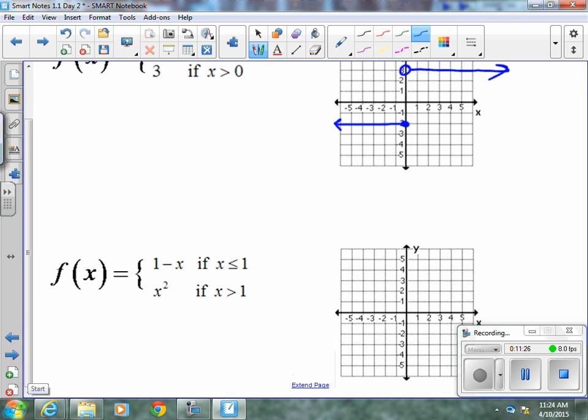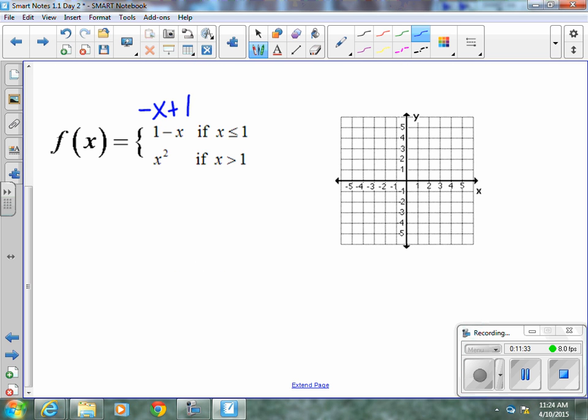Now, this is similar also. 1 minus x, if x is less than or equal to 1. Well, 1 minus x is the same as negative x plus 1. So, we know that it starts at 1, and it goes down 1, right 1, or up 1, left 1. And, this graph holds for all x's that are less than or equal to 1. So, that's going to be this portion of your graph. And, then, x squared, if x is greater than 1, well, we know what x squared looks like. At 1, 1 squared is 1, so our y value is 1. At 2, it's 4. So, this portion of the piecewise function would look like that. Keep in mind, piecewise functions are functions, so they should pass the vertical line test when you are completely finished. If they don't, check your work, because you made an error.